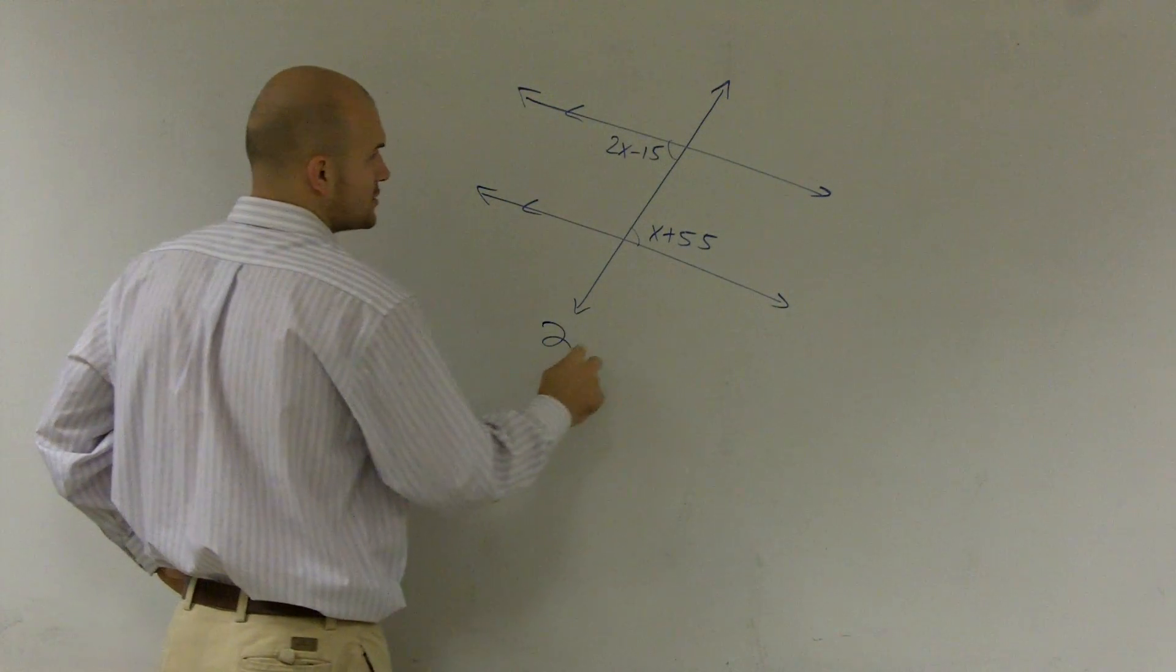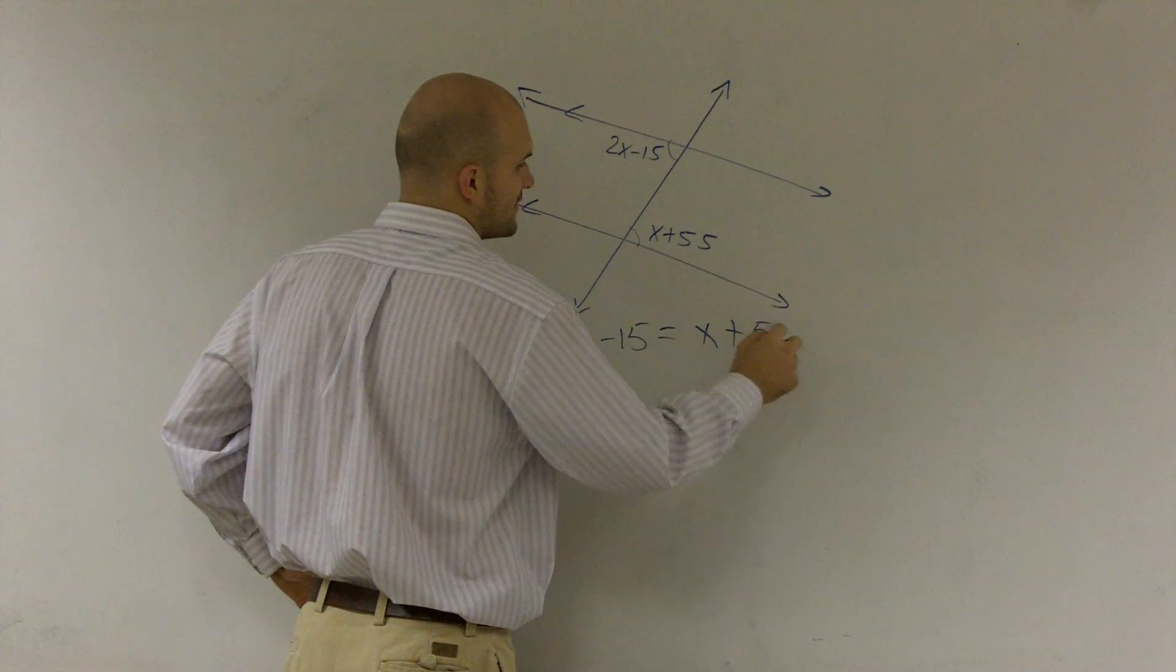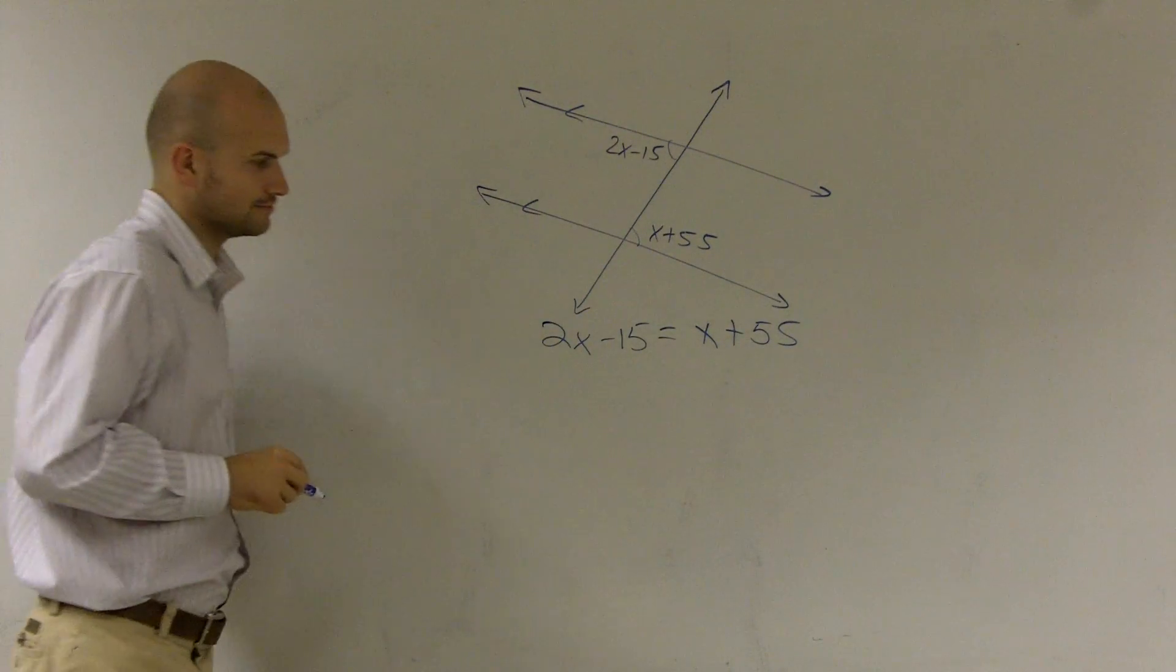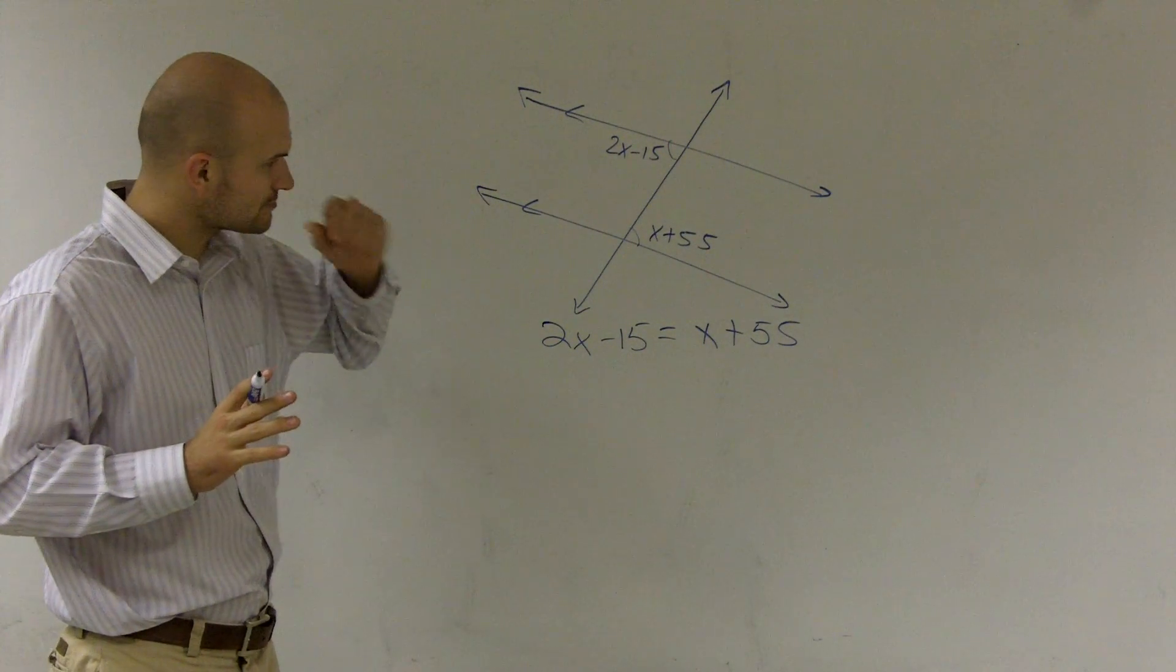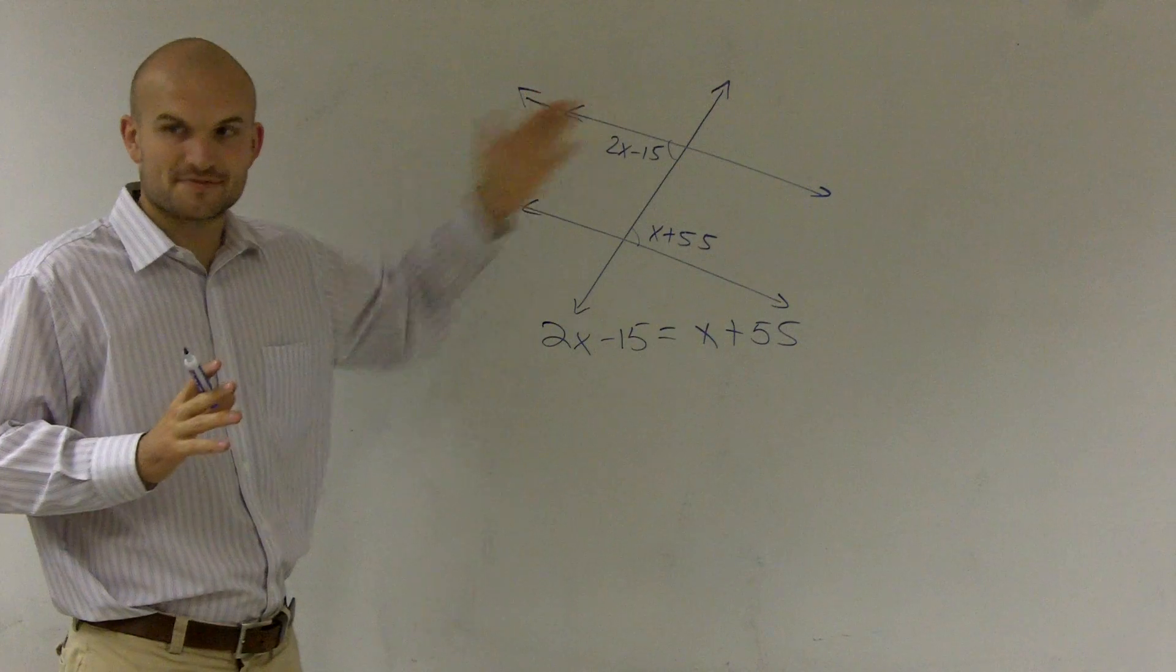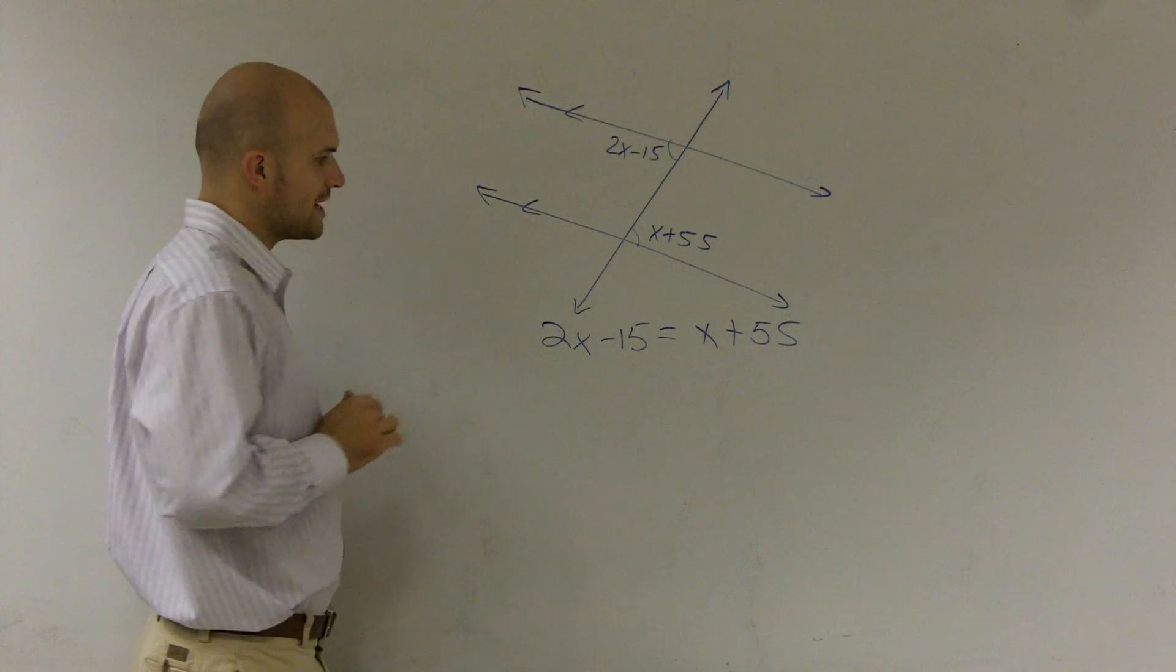So I can write the equation 2x minus 15 has to be equal to x plus 55. Alternate interior angles are equal to each other when the transversal crosses parallel lines. If the lines aren't parallel, then they're not equal to each other.